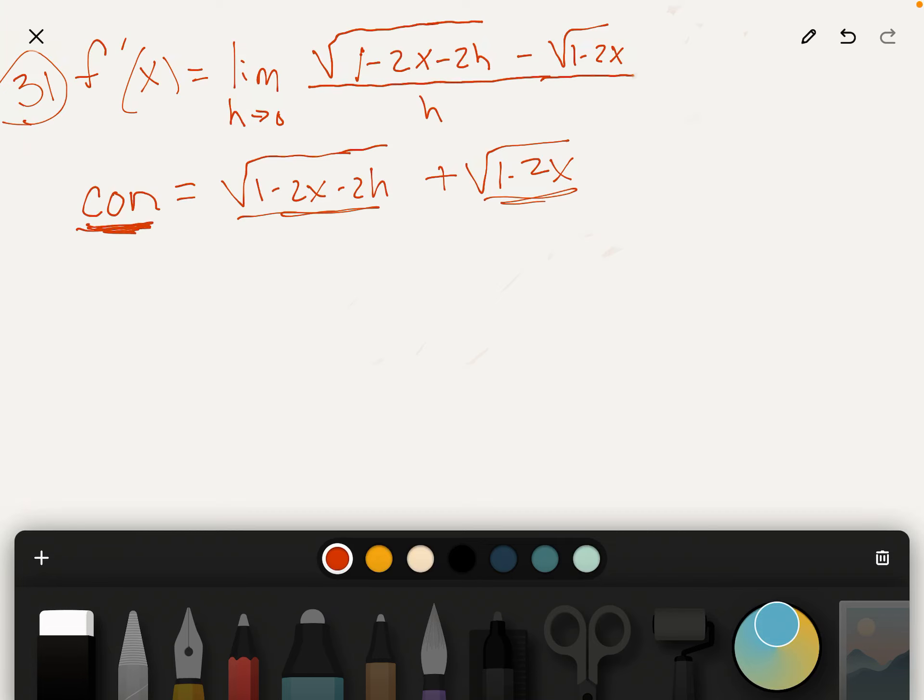Okay, so here's problem 31, and we want to find f prime of x, and here's the expression that we need to evaluate to find it. And you were right, you want to multiply both the numerator and the denominator by the conjugate of the numerator, which is here.